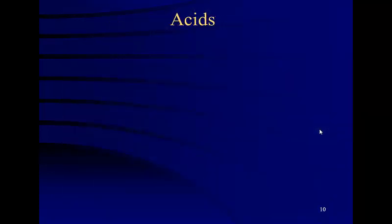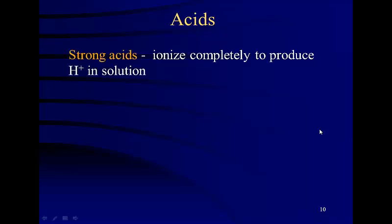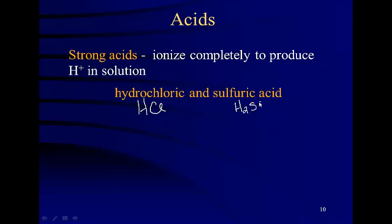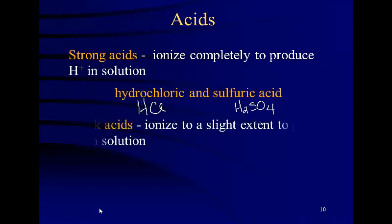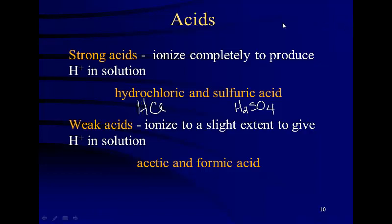Acids, the Arrhenius definition of a strong acid will ionize completely to produce hydrogen ions in solution. For example, hydrochloric acid and sulfuric acid. Remember, sulfuric acid is the only one that is diprotic. Weak acids ionize only slightly. Acetic acid and formic acid are two examples of that. Please remember that this is the Arrhenius definition and applies only to solution.